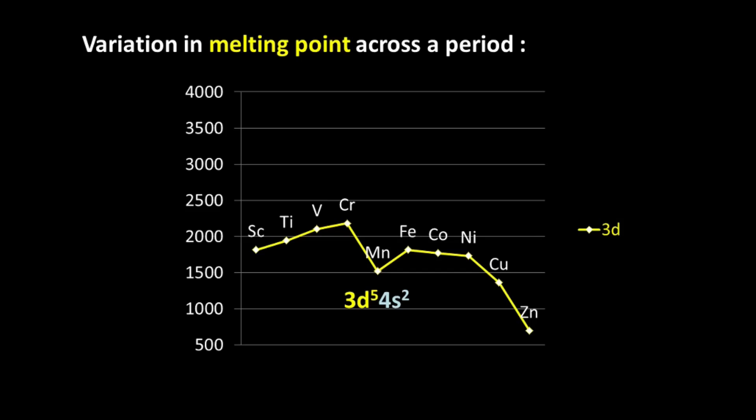Now this half-filled D5 and a fully filled S2 configuration is relatively stable. It is more stable than the D5-S1 electronic configuration of chromium. And thus, it is slightly more energetically unfavorable for the D orbitals to overlap and form molecular orbitals in case of manganese. So therefore, manganese has a lower than expected melting point and that is why we see this particular dip.